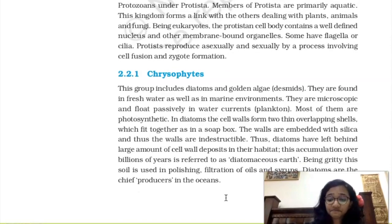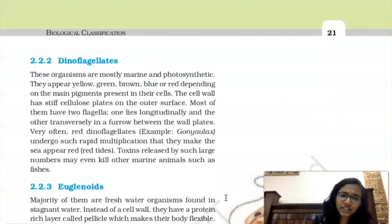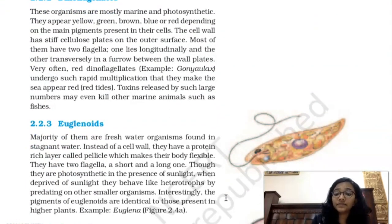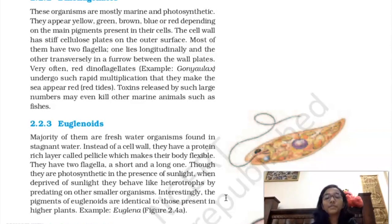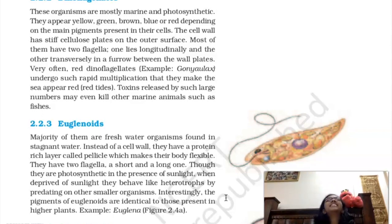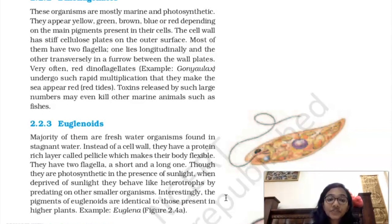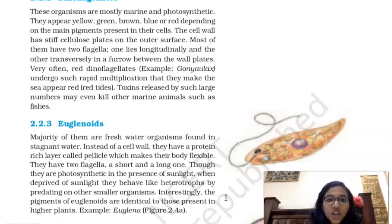The second classification is Dinoflagellates. These are only marine organisms and are also photosynthetic. They contain many pigments — yellow, green, and red — and their color depends on the dominant pigment. Unlike chrysophytes whose cell wall contains silica, in dinoflagellates the cell wall is made up of cellulose plates, similar to plants.